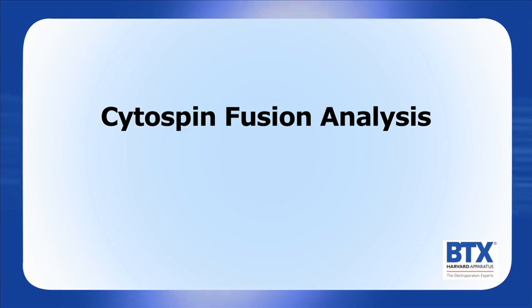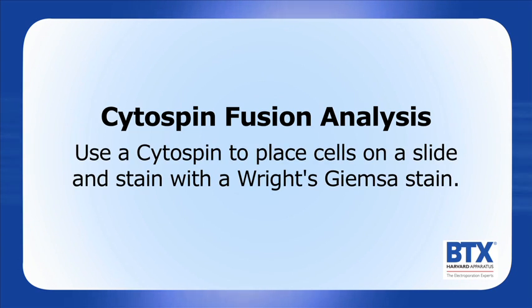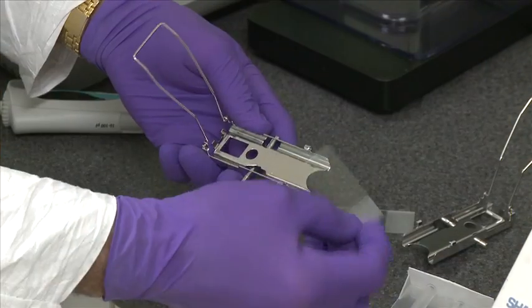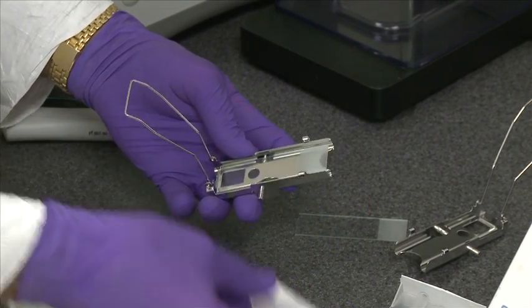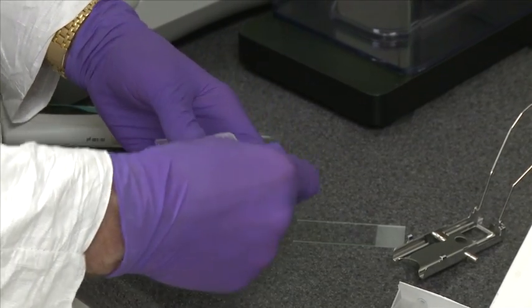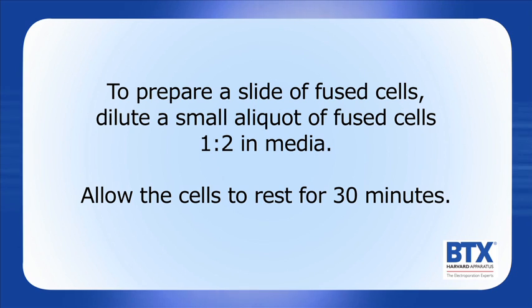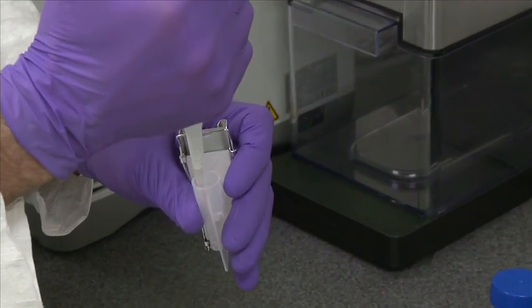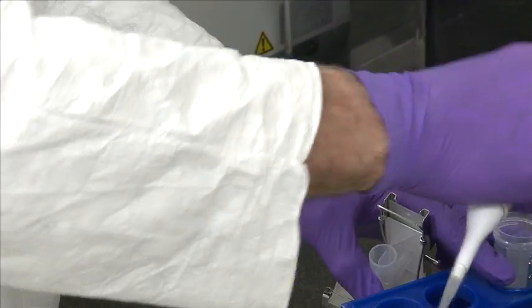It is helpful to analyze the cells immediately after the fusion to determine if there is a problem with the fusion itself. A simple analysis is to use a cytospin to place cells on a slide and stain the cells with a Giemsa stain. Assemble the cytospin apparatus by fitting the glass slide in with a double cytospin funnel and close the apparatus. Make a second one as a balance. To prepare a slide of fused cells, dilute a small aliquot of fused cells 1 to 2 in media. Allow the cells to rest for 30 minutes. Take 100 µL of fused cells and pipette into the cytospin funnel.